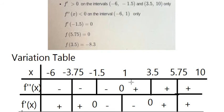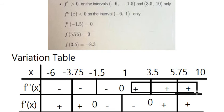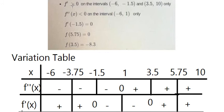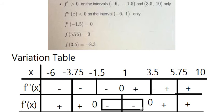From 1 to 10, the second derivative should be positive. Because we know two intervals where the first derivative is positive, between minus 1.5 and 3.5 the first derivative should have a negative sign.